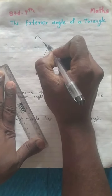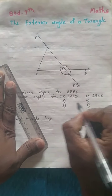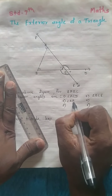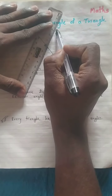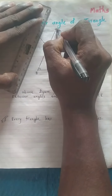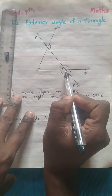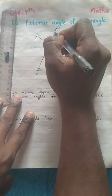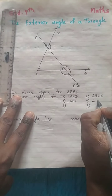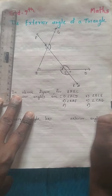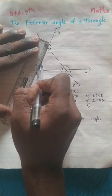At vertex A, we extend side BA to get angle BAF. We then see each side. Looking at the exterior angle here, its name is angle CAG — angle CAG is also an exterior angle at vertex A.